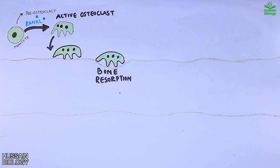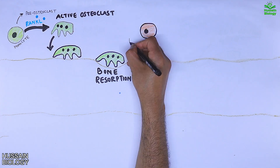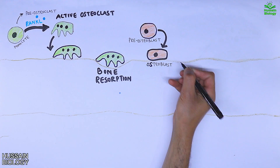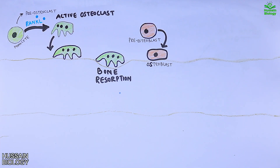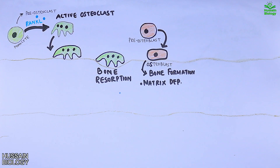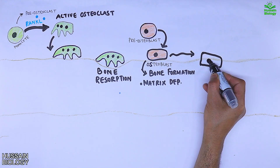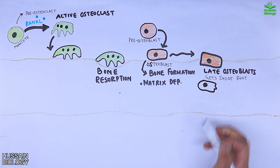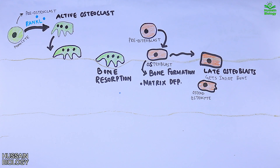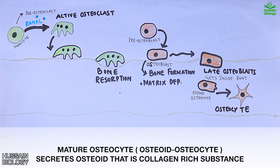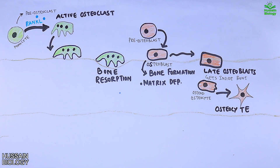When resorption is complete, new bone tissue is synthesized by osteoblasts. The active osteoblast on the bone surface starts bone formation by matrix deposition, synthesizing hydroxyapatite and many other extracellular matrix proteins. The late osteoblast then moves inside the bone, where it synthesizes osteoid — the collagen-rich substance — and eventually turns into an osteocyte. These late events inside the bone constitute the mineralization process.